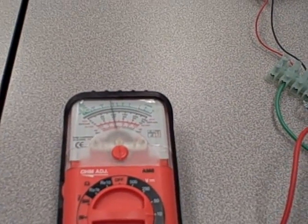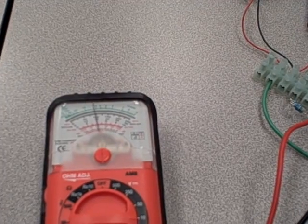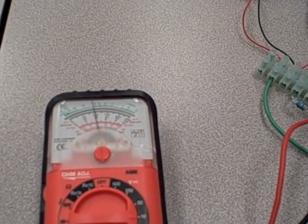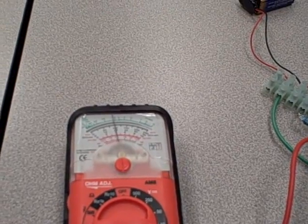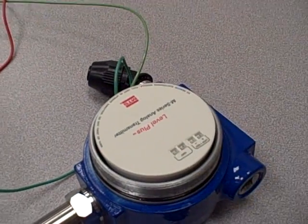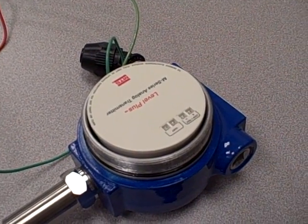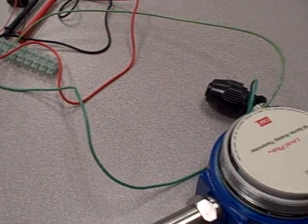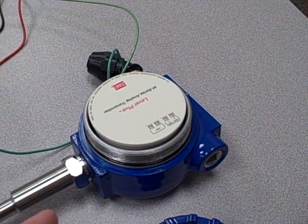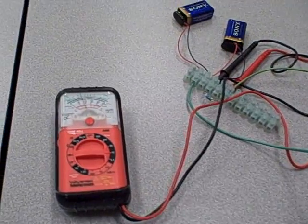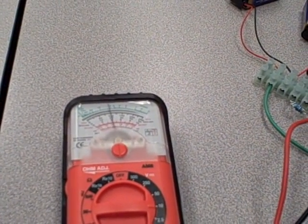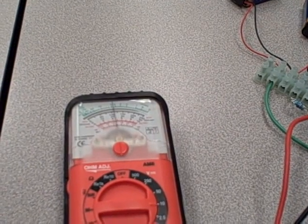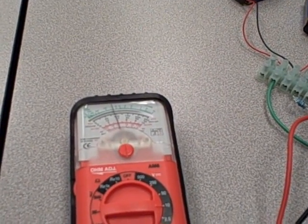You can hear there's a time delay between the time I move the float and the time you see the meter needle react to that change. That tells me that this electronics package here is not continuously measuring the level or position of that float. Instead, it's sending out those interrogation pulses on an interval, in this case a relatively slow interval. The interval being, it looks like about a second or so of time.